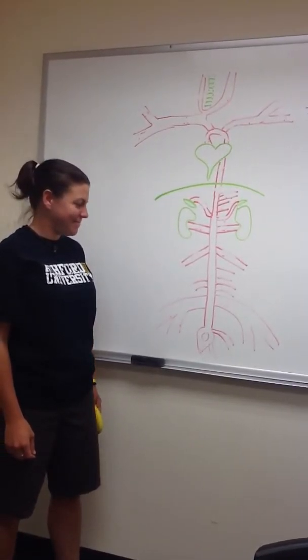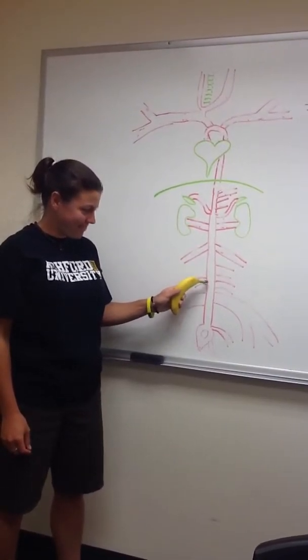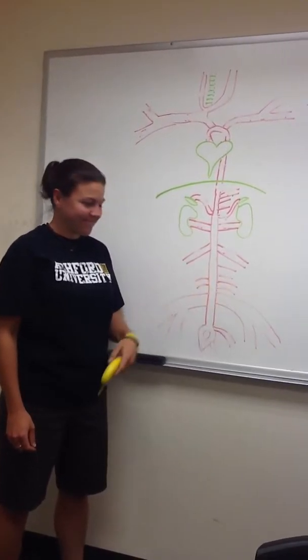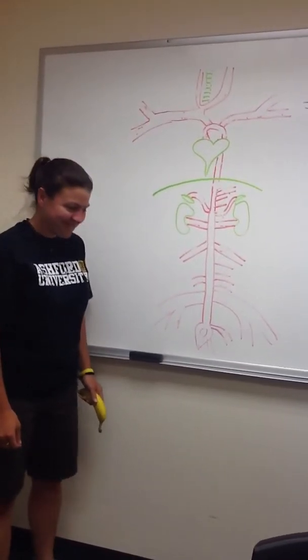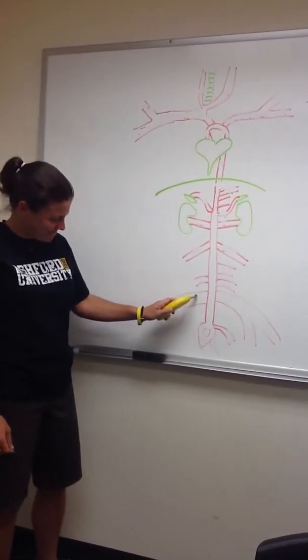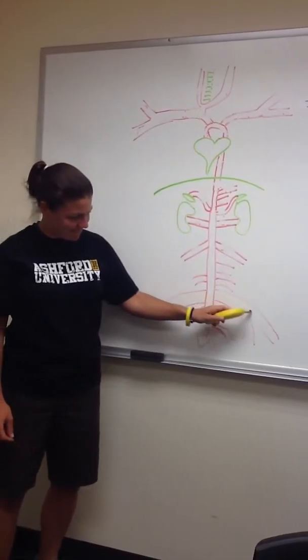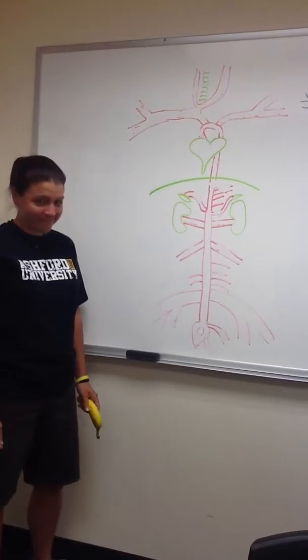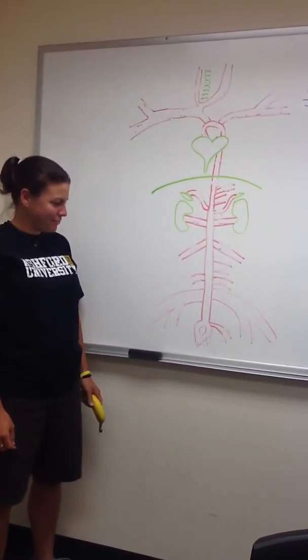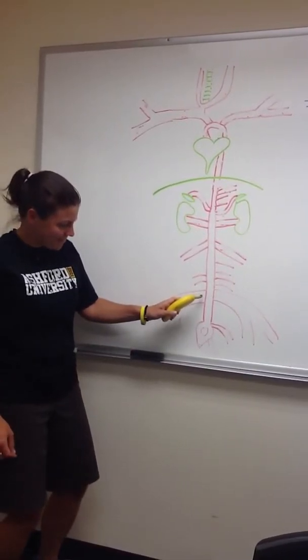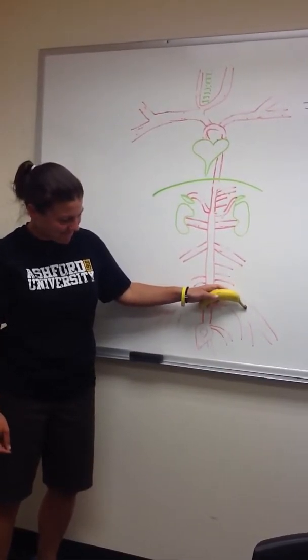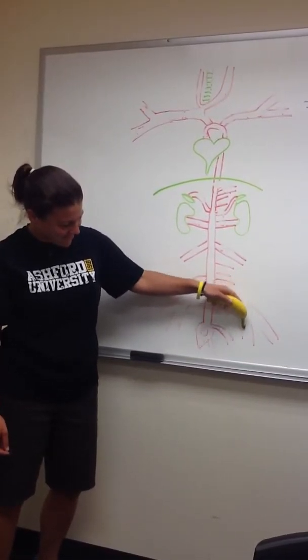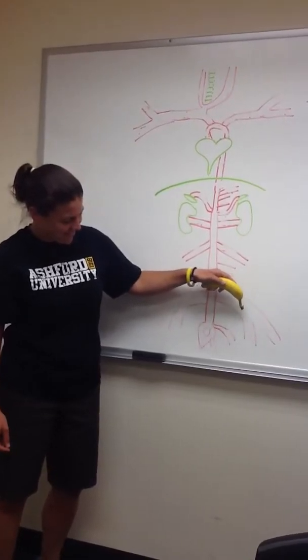But then, right after that, it went to two ilial lumbars. Just when I thought it was through, it went to two external iliacs. Now, if you just followed one of the external iliacs, such as the left, then I found it divided even again, into the femoral and the deep femoral.